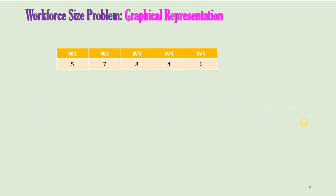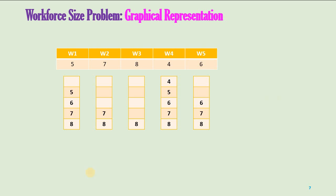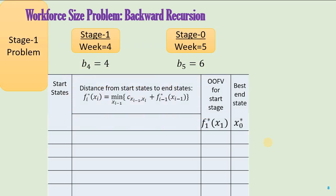Now let us see how we can represent the problem graphically. In this tableau, I am showing week one to five and the corresponding minimum requirements. Based on the minimum requirements and our assumption that we will always try to have more employees than needed, these are the states. From this graphical representation, we have a fair idea about the states, and using this we can create the tableaus.